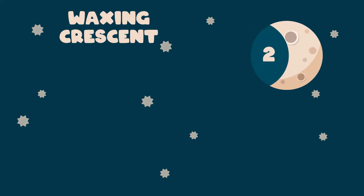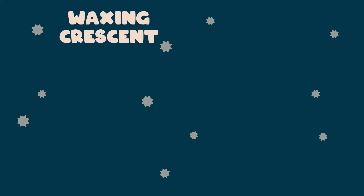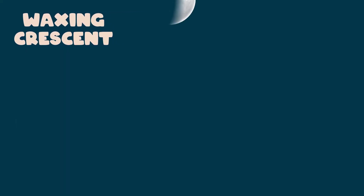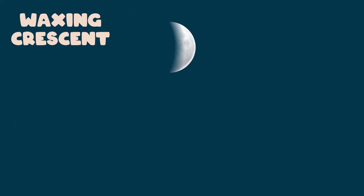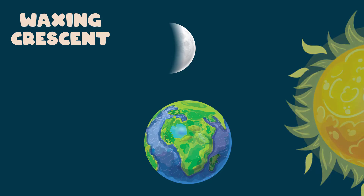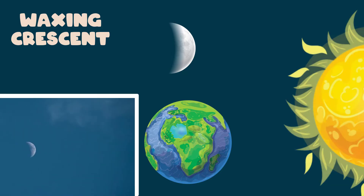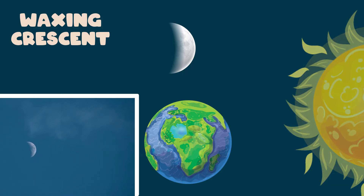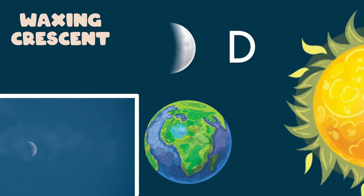Waxing Crescent: it happens three or four days after the new moon, and a part of the illuminated face of the moon is in the direction of the earth, so we can see it in the sky. A trick to identify it is that it looks like the letter D.